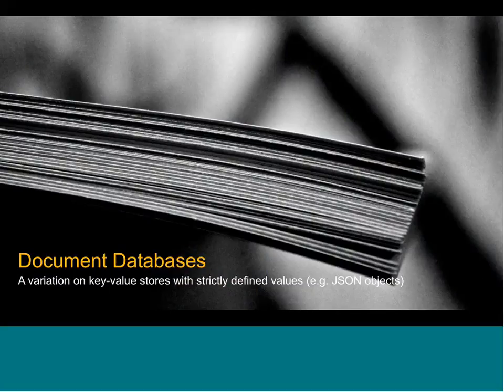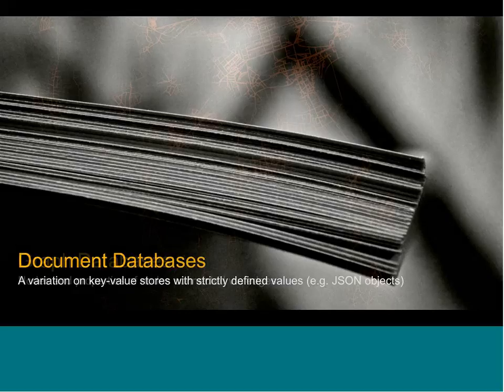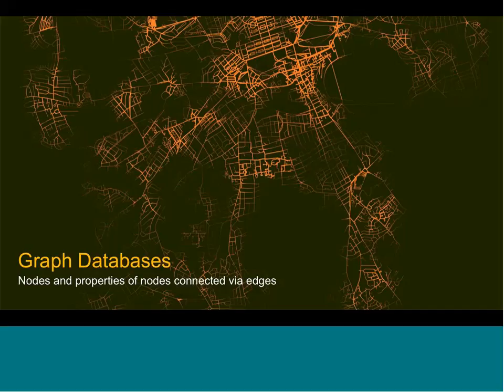Document databases tend to be a good fit for modern web and mobile apps because the document model tends to fit well for those sorts of applications. Graph databases are based on graph theory, in which we have nodes and properties connected through edges. These can represent things like a street map for driving directions, product recommendations — people that bought this product also bought this other product — and of course social networks, such as friend-of-a-friend relationships or six degrees of Kevin Bacon. Graph databases have a lot of uses.